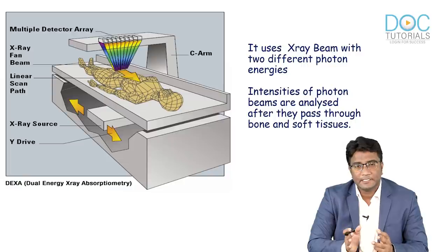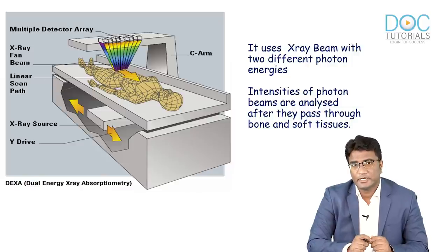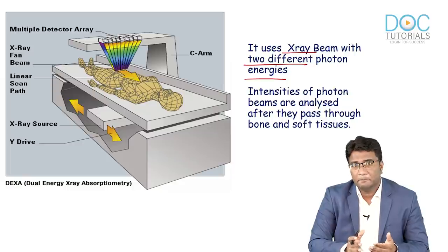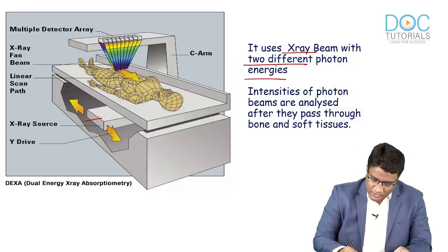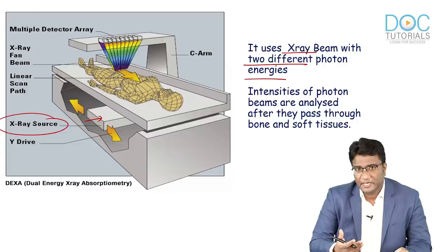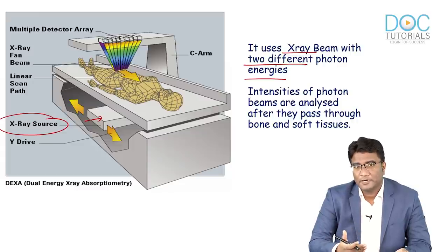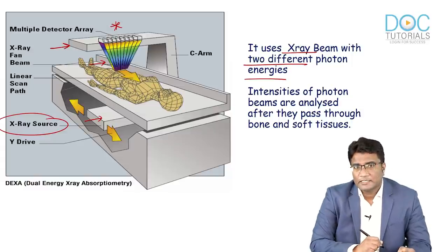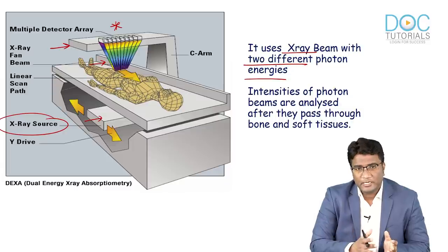DEXA uses two different types of X-ray energies — dual energies — and we look at their absorption. Soft tissues absorb one type of energy and bone, based on its mineral content, absorbs another type of X-ray energy. After the X-ray beam passes through the patient, it falls on the X-ray detector and is analyzed on a computer, giving a 2D image.